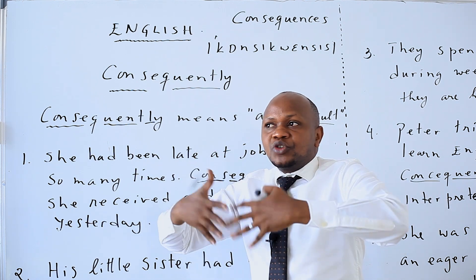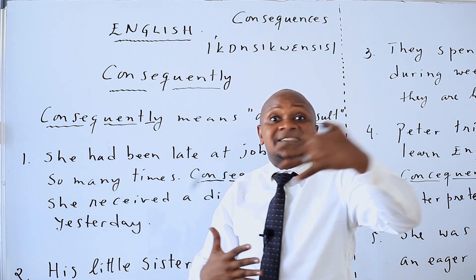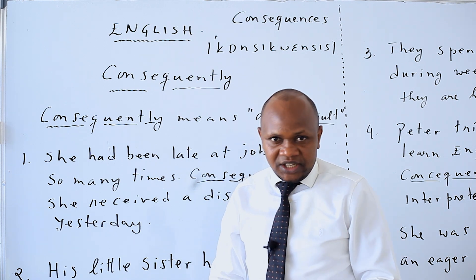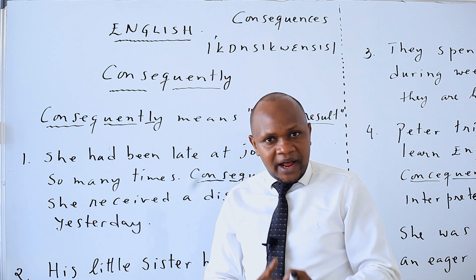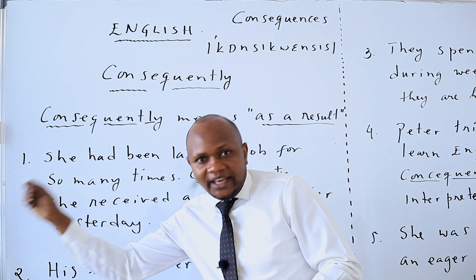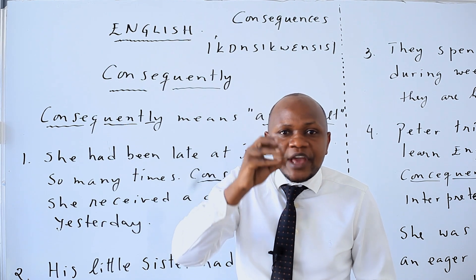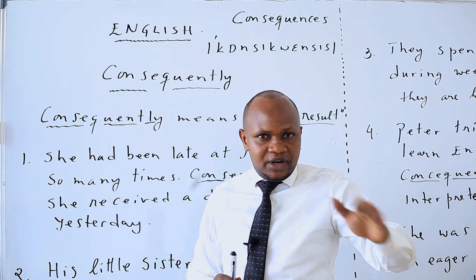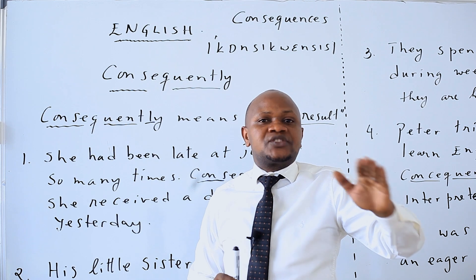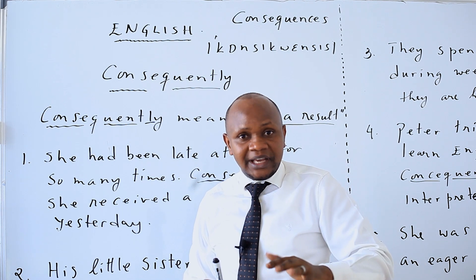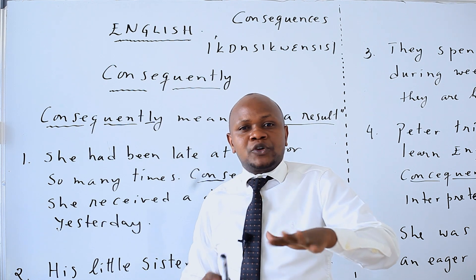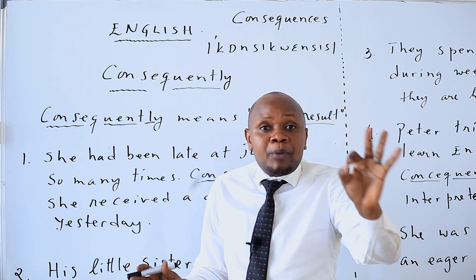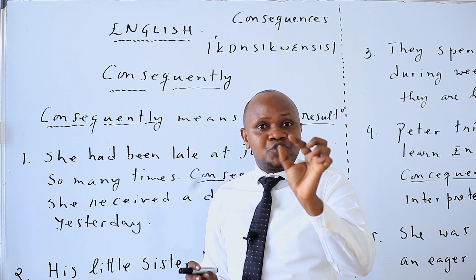Consequently — for example: that man had drunk a lot of beer. He had fought with so many people. He had quarreled in the pub for so many times. Consequently, he was put into prison. That is how to use 'consequently.'